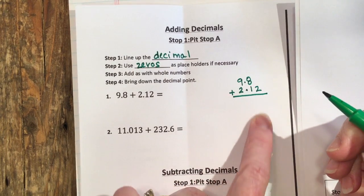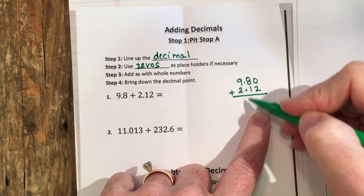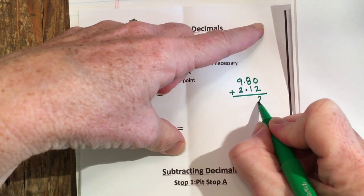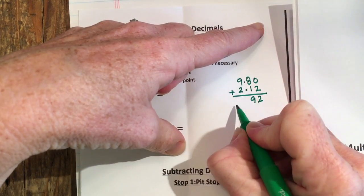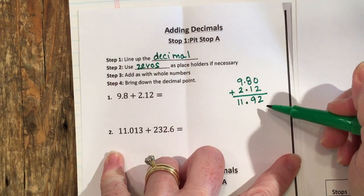And I need to add these, but here's an example of a place where I need a 0 so that all these numbers are lined up with another number. And then I just add, so 0 plus 2 is 2, 8 plus 1 is 9, 9 plus 2 is 11.